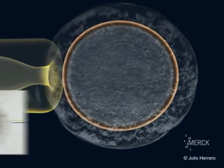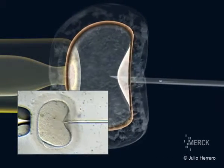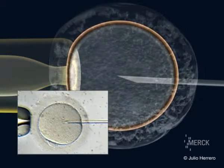The oocyte is fixed with a micropipette and the other side is pinched by the needle, and the sperm is injected into the oocyte.